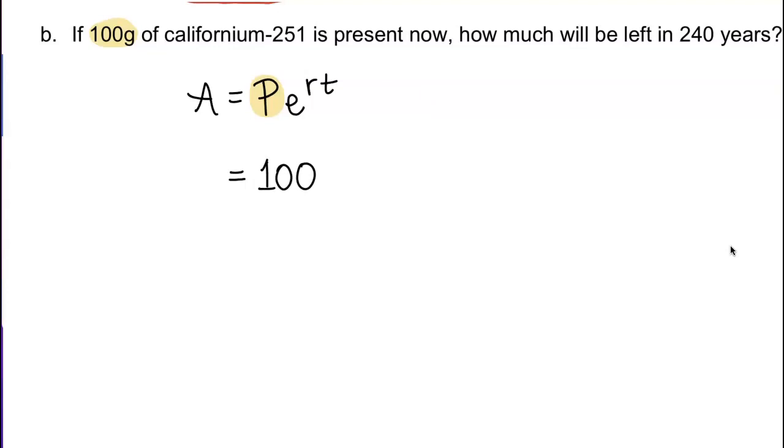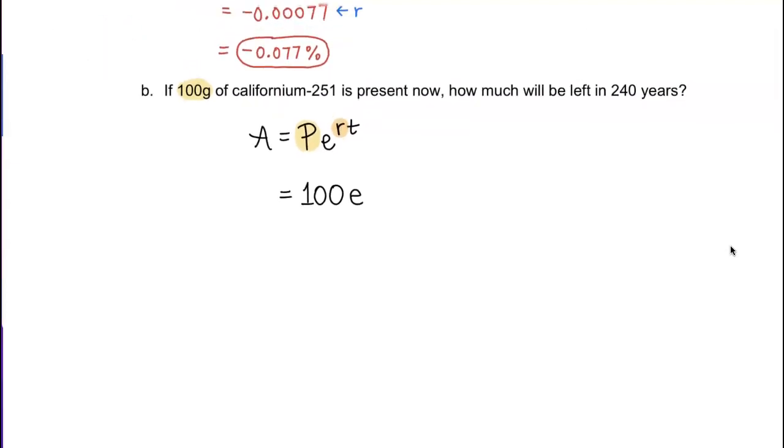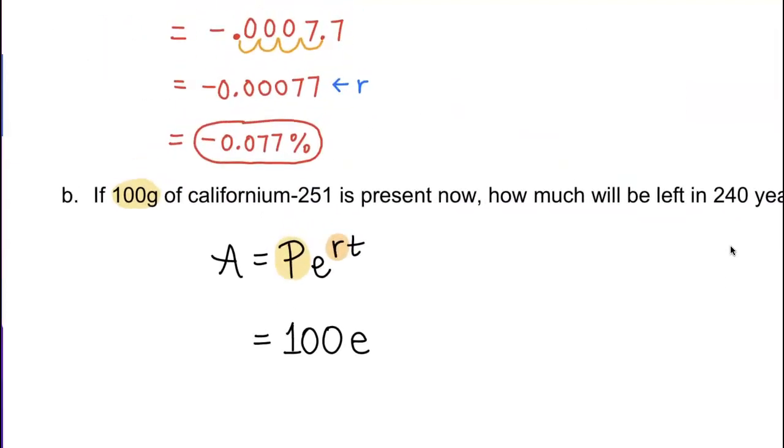Continue. We're going to write E raised to the R-th power. We just found R in part A, right? So let's go find what that R is. R is this decimal right here: negative 0.00077.